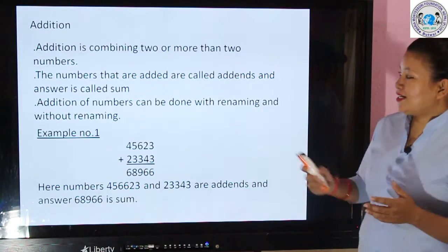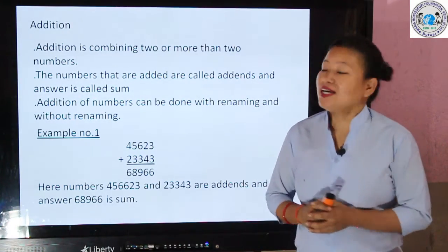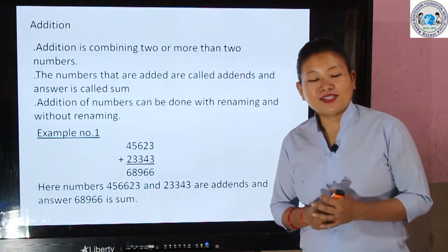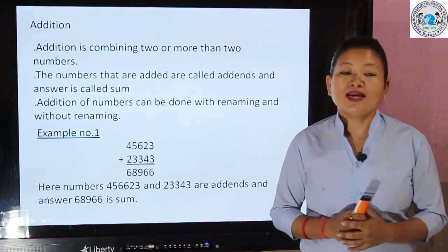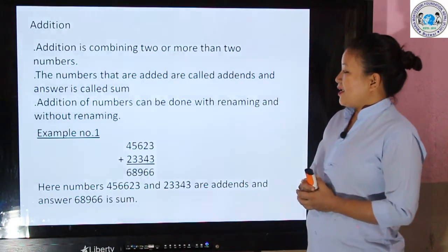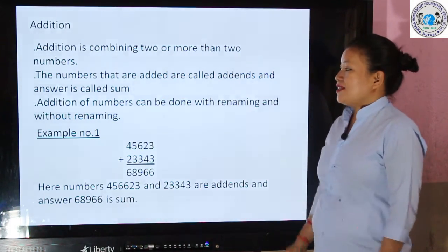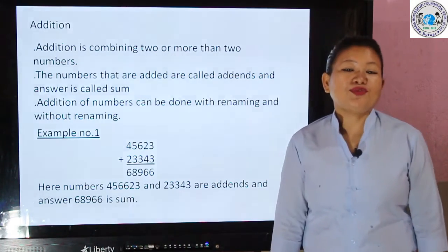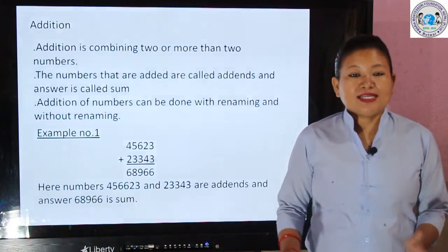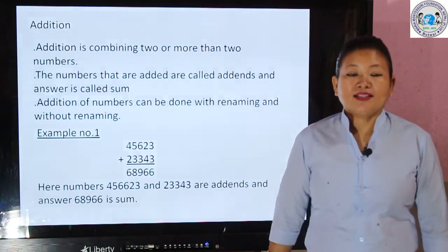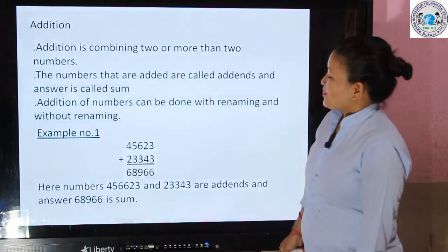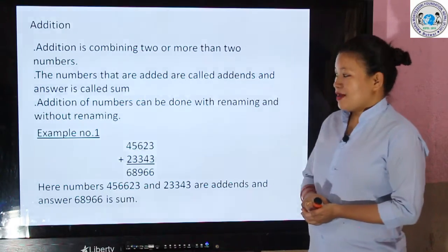First of all, let us know about addition. Addition is combining two or more than two numbers. The numbers that are added are called addends, and the answer is called the sum. That means if you add 20 and 30, then 20 and 30 are addends, and the answer 50 will be the sum.